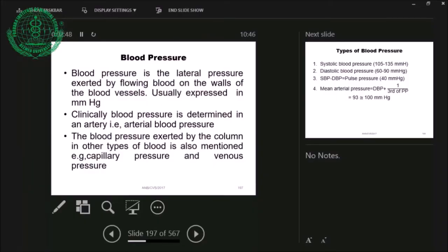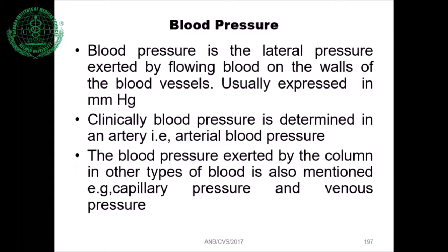If you remember the definition of blood pressure, you can see on the slide that blood pressure is defined as the lateral pressure exerted by flowing blood on the walls of the blood vessel, usually expressed in millimeters of mercury. Blood vessels include all types, starting from larger arteries to capillaries and venules. Clinically, blood pressure is determined in a superficial artery — arterial blood pressure.